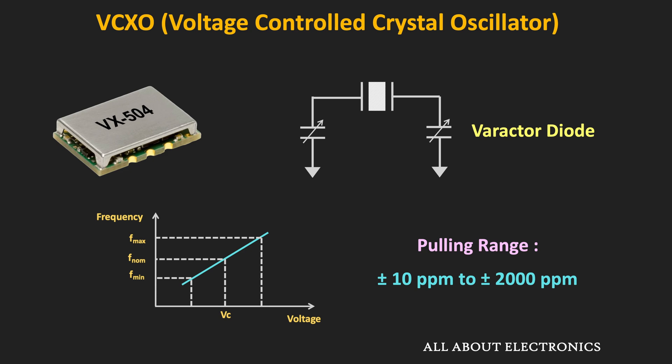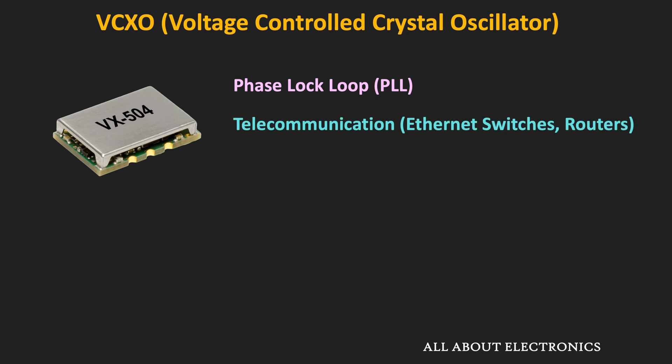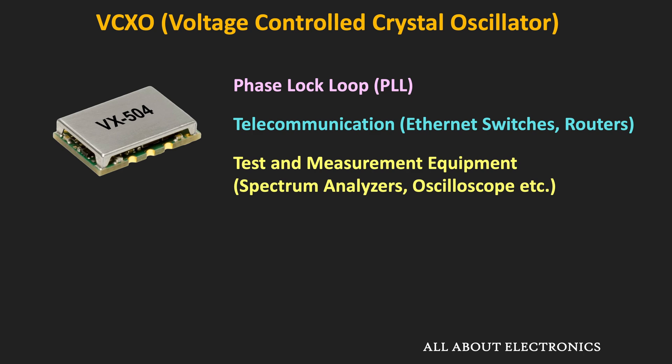VCXOs with a higher pulling range have lower stability, so while selecting a voltage-controlled crystal oscillator for a specific application, one should not go beyond the required pulling range to maintain good stability. VCXOs are used in many phase-locked loop systems, telecommunication applications, test and measurement instruments where it is required to change the clock frequency, and many industrial control systems.